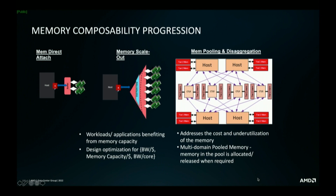Left to right, this is just a progression of how we see it. Direct attached memory to the socket — everybody knows about it, there's only so much you can scale using it. Expanding to 20 channels is crazy. So what's the next best step? You can do some sort of scale-out memory. This is where the first generation of CXL comes into play, where hyperscalers and enterprise and HPC workloads have specific bandwidth per core or capacity per core numbers.